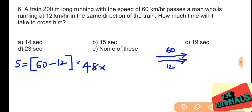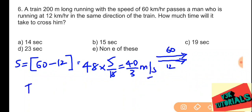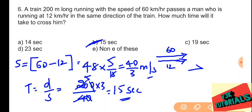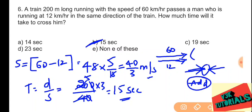Converting the relative speed: 48 km/h into meters per second gives 40 by 3 meters per second. Time equals distance divided by speed: 200 divided by 40 by 3 equals 15 seconds. So option B is the correct answer. When moving in the same direction, we subtract the speeds.